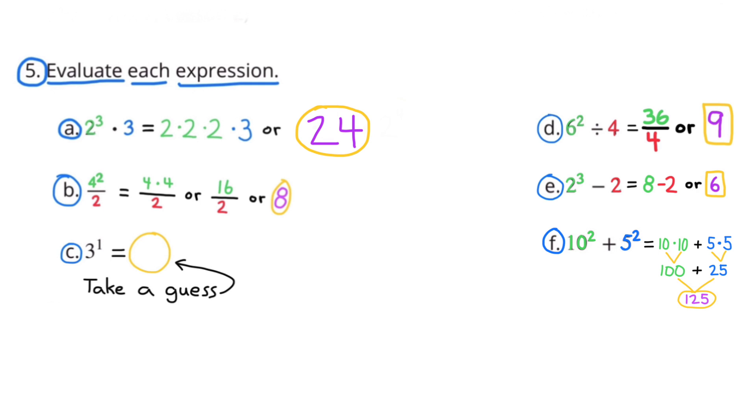Number 5 F. 10 to the 2nd power plus 5 to the 2nd power. That's the same as 10 times 10 plus 5 times 5. 10 times 10 is 100. 5 times 5 is 25. So 100 plus 25 equals 125.